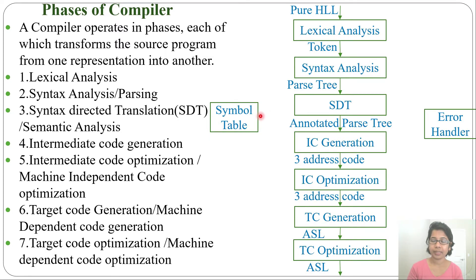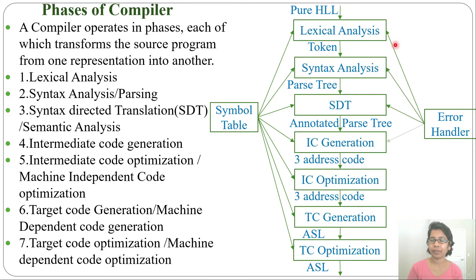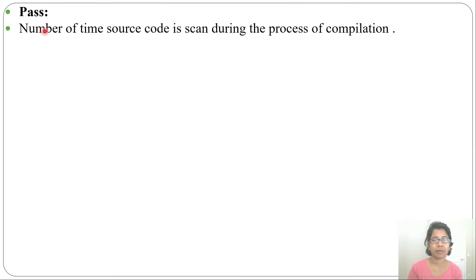The symbol table is a database that stores information and is connected with all the phases, so every phase can access it. The error handler is also connected with all the phases. This is the diagram for phases of compiler — there is a symbol table and an error handler connected with all the phases, each transforming one representation to another.